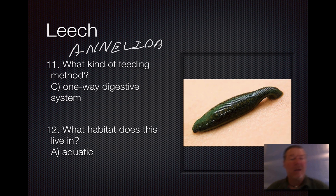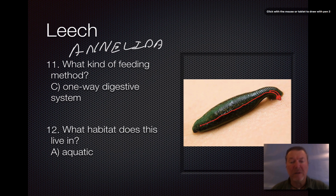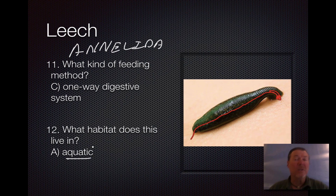The leech has a one-way digestive system. They take in their victim's blood — they're parasites — and it goes through a digestive system and any waste product comes out the anus. Because they're leeches, in this case the habitat is aquatic. Earthworms would be terrestrial, and marine worms would also be aquatic.